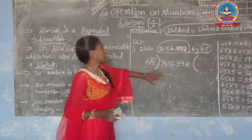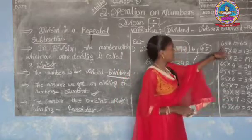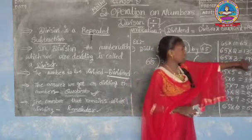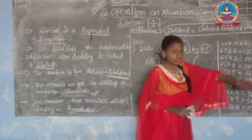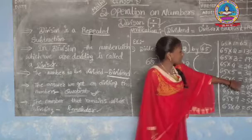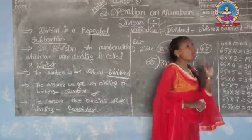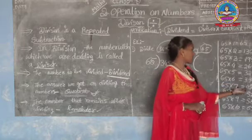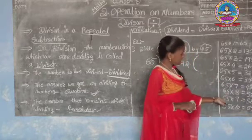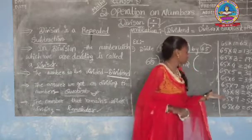First, we will write the 65 times table — its multiplications. 65×1=65, 65×2=130, 65×3=195, 65×4=260, 65×5=325, 65×6=390, 65×7=455, 65×8=520, 65×9=585, 65×10=650. This is the table of 65.